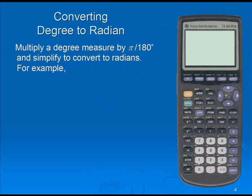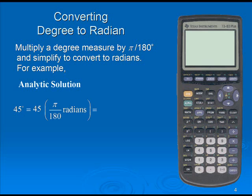Converting Degree to Radian. Multiply the degree measure by π divided by 180 degrees and simplify to convert to radians. For example, 45 degrees: we take our 45 degree angle, multiply by π over 180 degrees, which simplifies down to π over 4 radians.